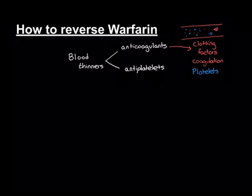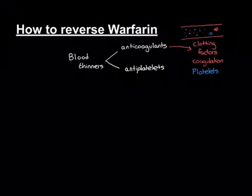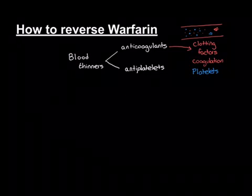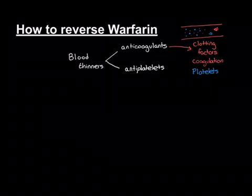These two separate processes can be activated separately. In principle, you can get a blood clot that forms just from clotting factors, or one that forms just from platelets, but often they are combined. So if we want to decrease the ability of the blood to form blood clots — i.e. thin the blood — we can either target the clotting factors, which is what anticoagulant drugs do, or target the platelets, which is what antiplatelet drugs do.